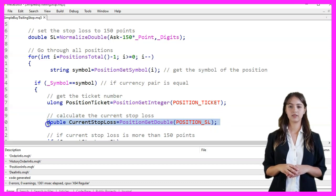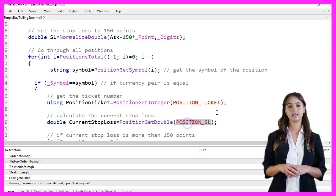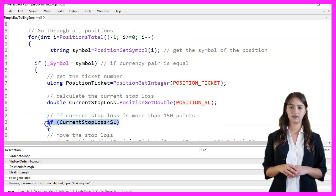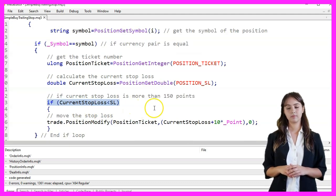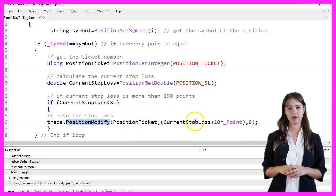Next, we calculate the current stop loss for the position using PositionsGetDouble with the PositionsSL parameter. If the current stop loss is less than 150 points below the AskPrice, we move the stop loss by 10 points using the TradePositionModify function.